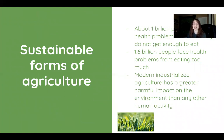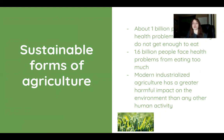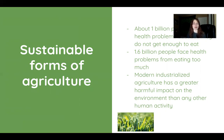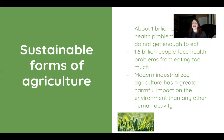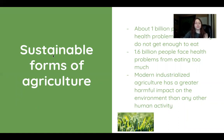Roughly one billion people have health problems from not getting enough to eat — typically in developing countries in Africa and Asia — suffering malnutrition and starvation. Conversely, 1.6 billion people face health problems from eating too much. We need to balance food supply. Modern industrialized agriculture has a harmful environmental impact through mechanization, releasing large amounts of greenhouse gases.